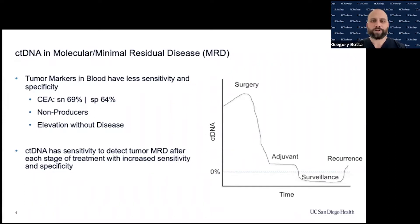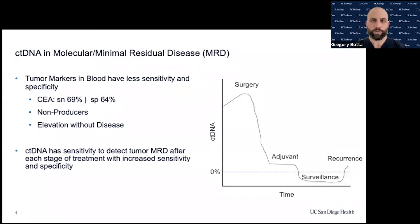ctDNA is able to detect molecular residual disease at each stage of treatment. If we follow ctDNA over a timeline, we would expect patients with non-metastatic disease resected at surgery to have ctDNA that goes from positive and decreases down. If it does not completely clear after surgery, we would initiate adjuvant therapy or chemotherapy to try to reduce it below the detection threshold, then follow patients over time with surveillance. If ctDNA comes above threshold at any time, it signals recurrence or refractory disease.